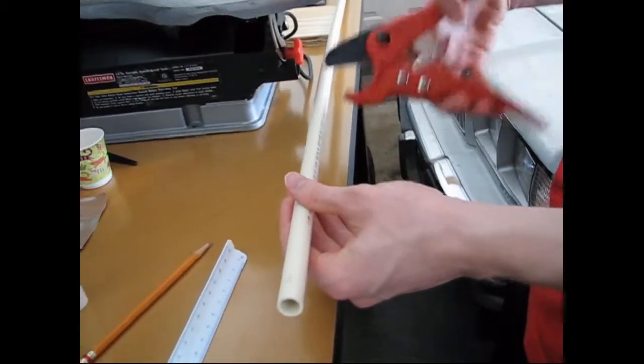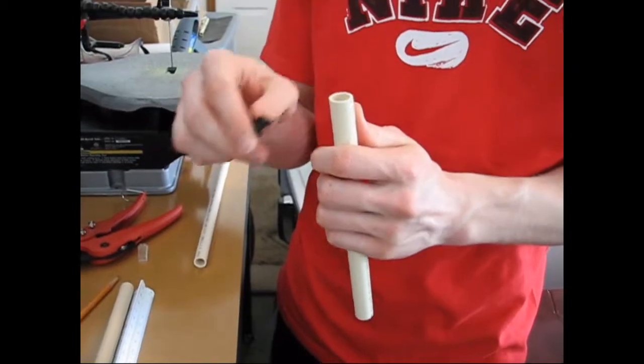Cut off two of those or more if you want to make one with more than two. Then deburr the ends if necessary.